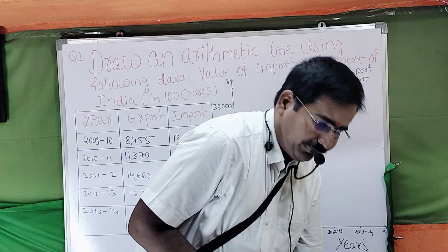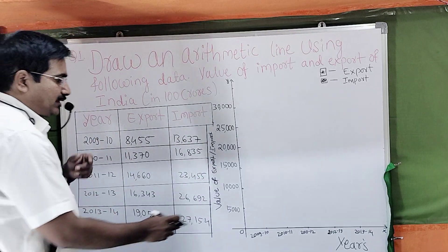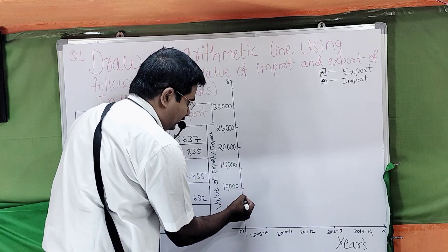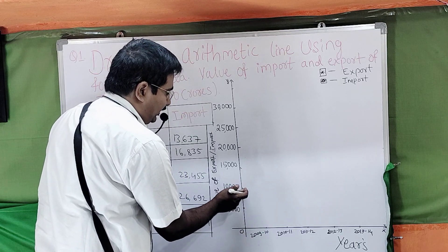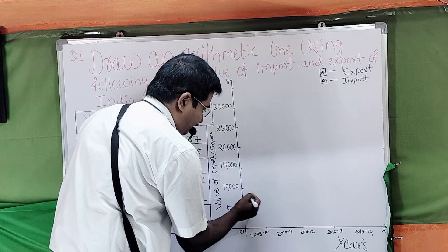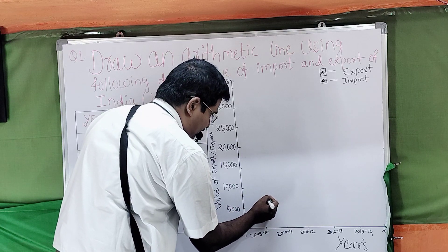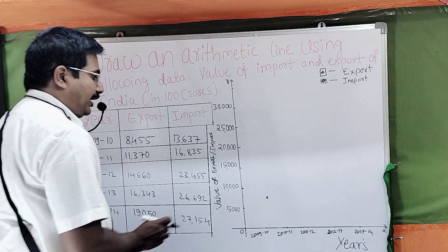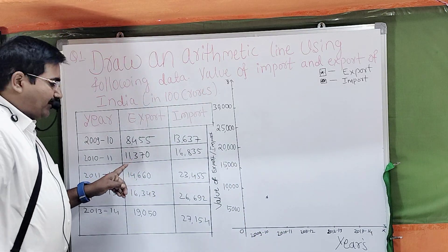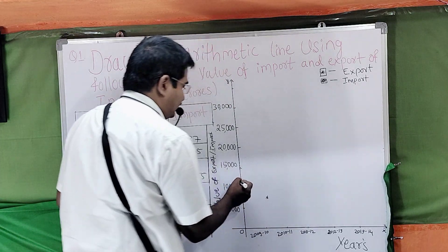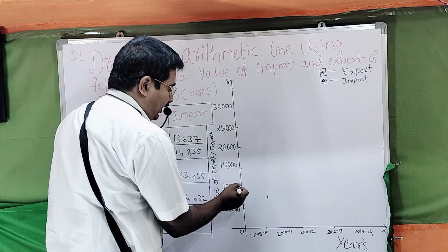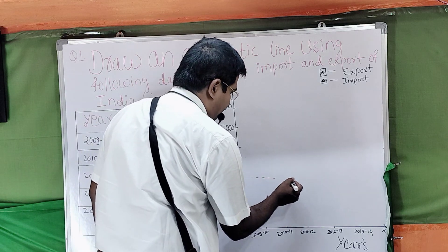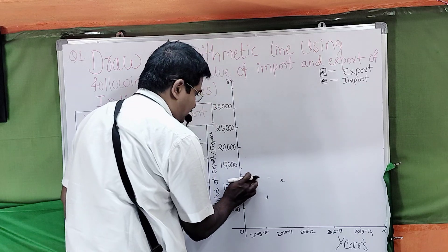Then we are going finally to the export column. In 2009-10, how many they have exporting? 8,400 — in between 7 and 8 — so 8,400, that point is indicated. Then 2010-11: 11,370 — in between 10,000 and 12.5 — that point is taken. So this is the star. Another star.